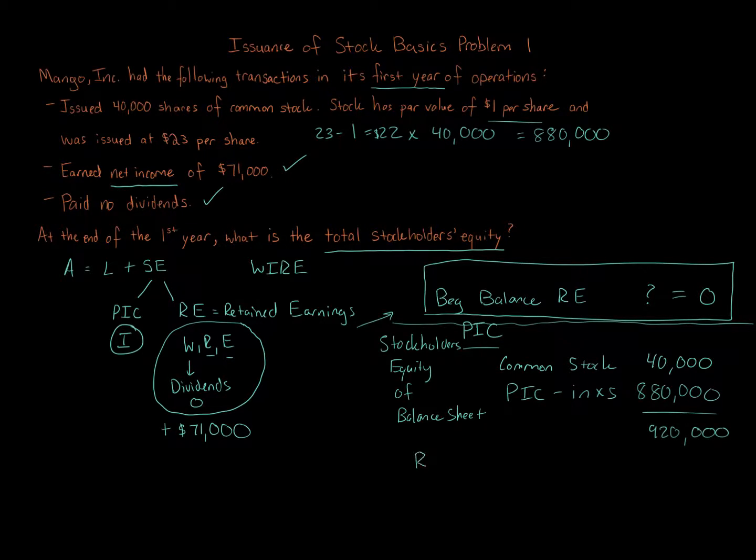Then we calculate retained earnings. The retained earnings balance started at zero. The increase to retained earnings for the year is $71,000, leaving our ending retained earnings balance at $71,000.